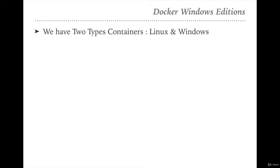We have two kinds of containers. A container is a process which will be executed by Docker — it is a process running inside Docker. Containers have two types: Linux containers and Windows containers. In late 2016, Windows released and announced Windows native containers.